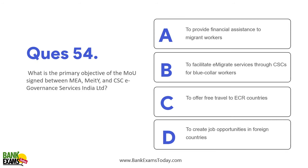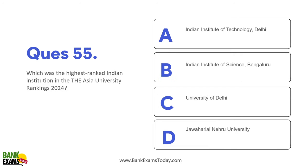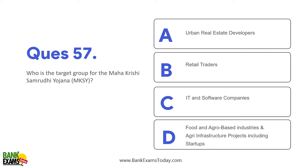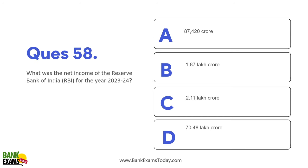What is the primary objective of the MOU signed between MEA (Ministry of External Affairs), MEITY, and CSC e-Governance? The goal is to facilitate e-migrate services through CSCs for blue-collar workers — covering services like ration card and voter card transfers. Which was the highest-ranked Indian institution in the Asia University Rankings 2024? The Indian Institute of Sciences, Bengaluru. What is the target group for Mahakrishi Samruddhi Yojana? Food and agro-based industries and agri-infrastructure projects including startups. What was the net income of RBI for the year 2023–24? 2.11 lakh crore.